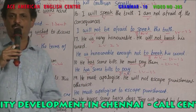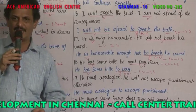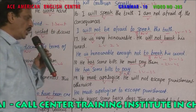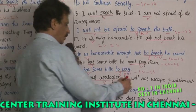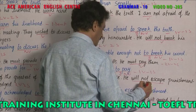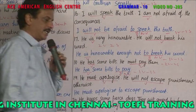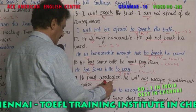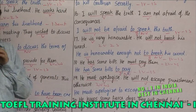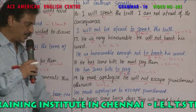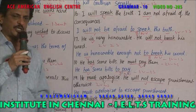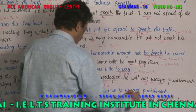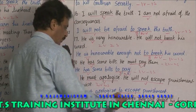Example 14: 'He must apologize' — to apologize means to say sorry; 'must apologize' is a verb. 'He will not escape punishment' — 'will not escape' is a verb. Two verbs, two sentences. Combined: 'He must apologize to escape punishment.' 'Will not escape' changes to the infinitive 'to escape.' 'Must apologize' is the single verb. One verb, one sentence.